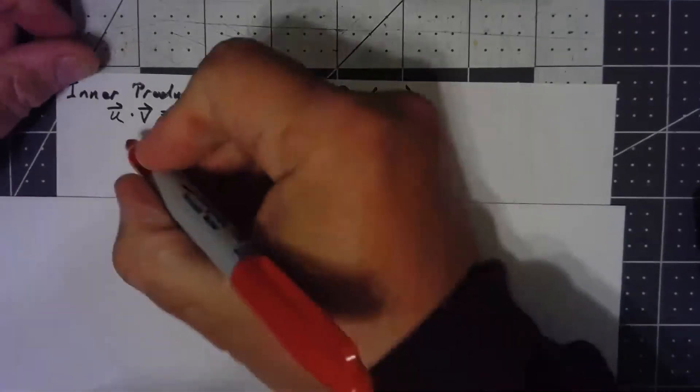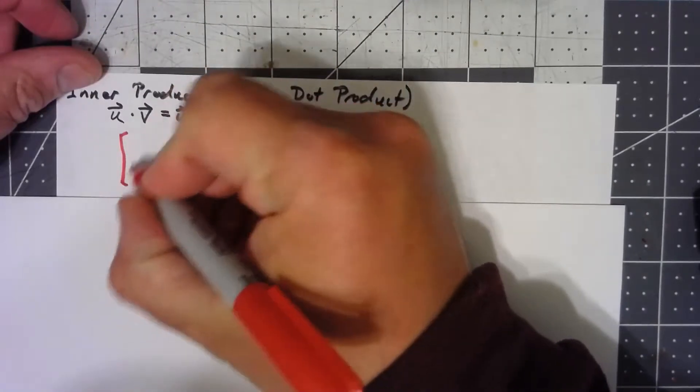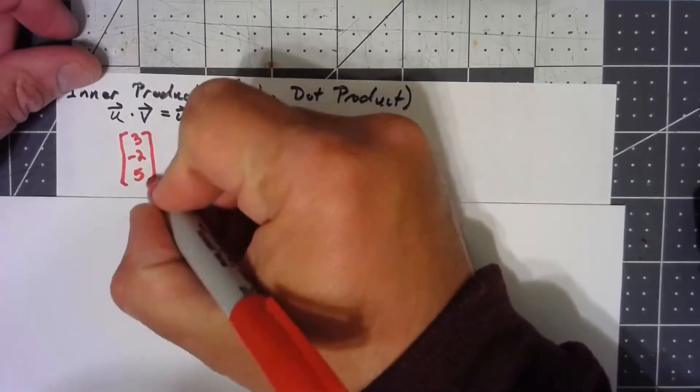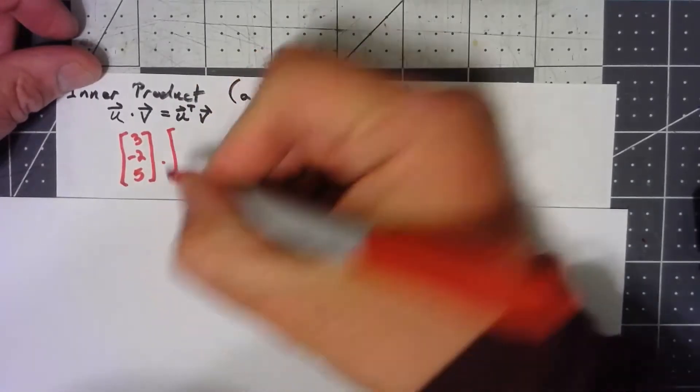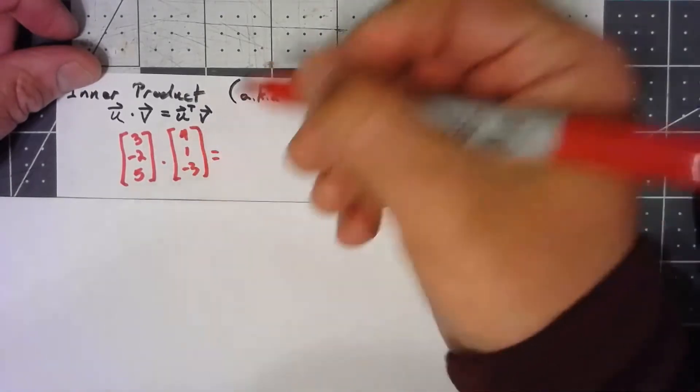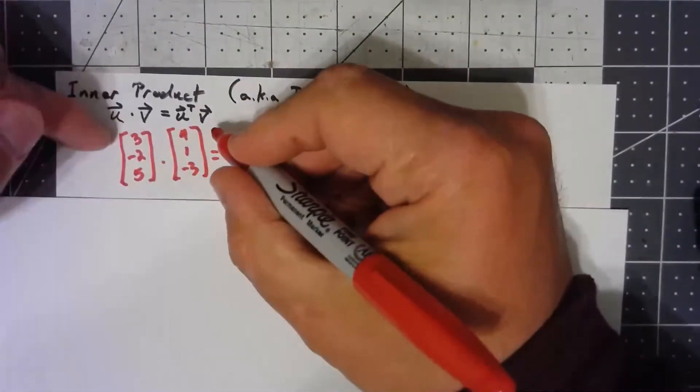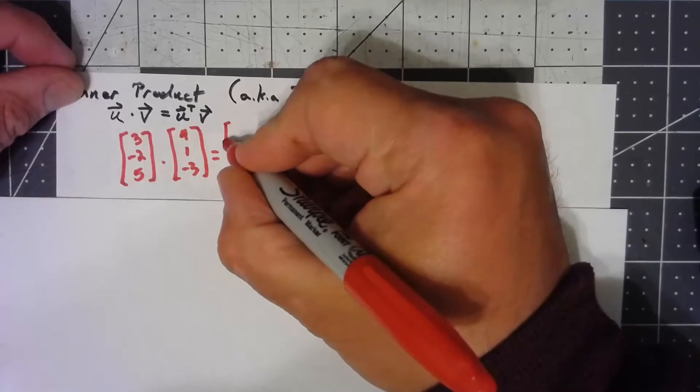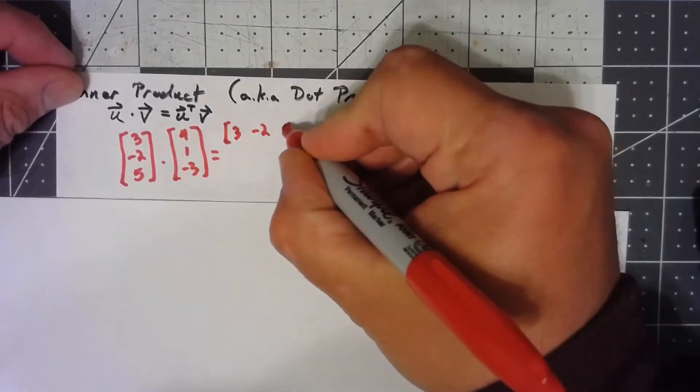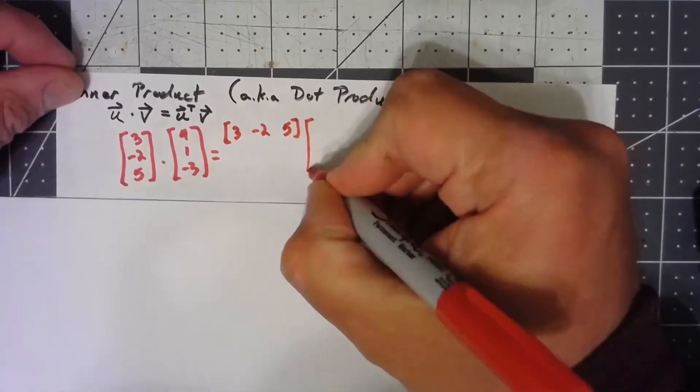So for example, let's do a three-dimensional case here. Let's say I have the vectors 3, negative 2, 5, and I wanted to dot that with 4, 1, negative 3. We're going to take the transpose of the first, which is going to turn it into a row, times the second.